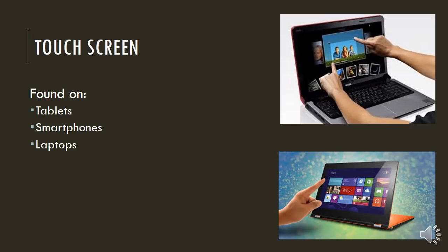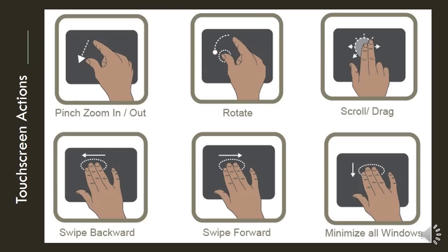Touchscreens are found on tablets, smartphones and laptops — some of the new laptops have got touchscreens. There are lots of touchscreen actions. If you use an iPad extensively you will find them out. You can pinch to zoom in or zoom out. You can put your thumb down and rotate with your finger. You can scroll or drag using two fingers, swipe backwards or forwards using two fingers, and you can minimize all the windows.